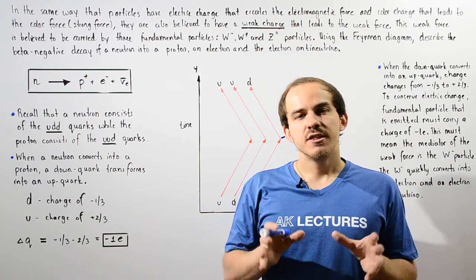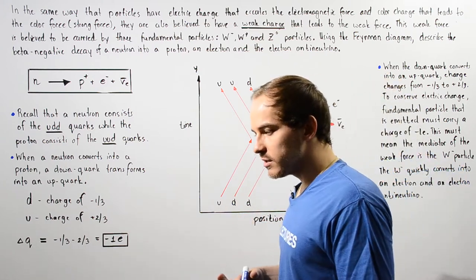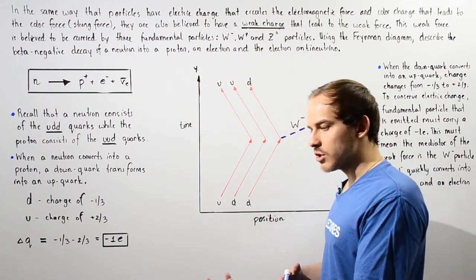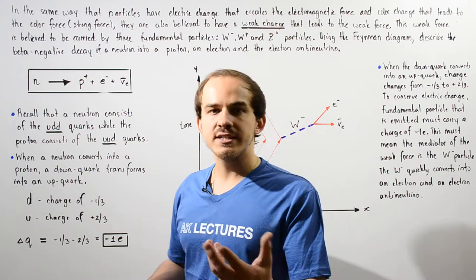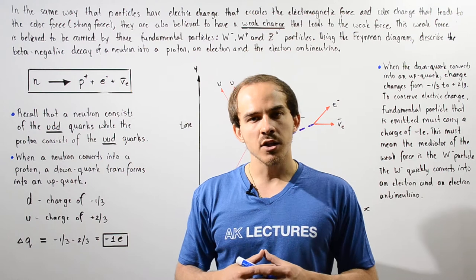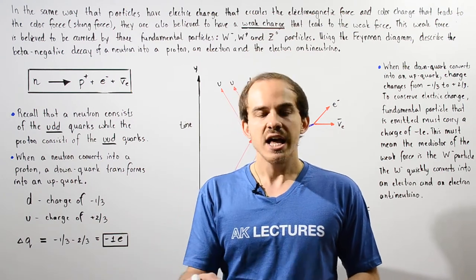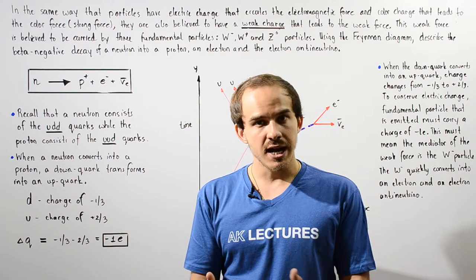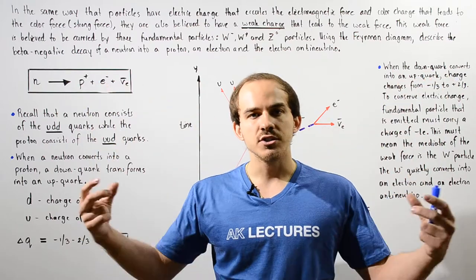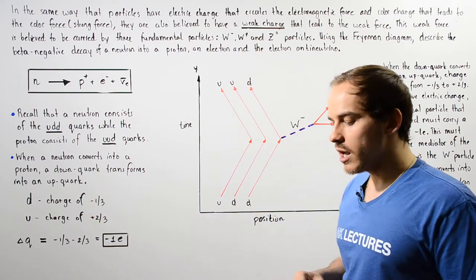In our discussion thus far on particle physics, we said that particles can have two types of charges. We spoke of electric charges that are carried, for example, by electrons. When two electrons interact with one another, they exchange the fundamental particle we call the photon. This photon is said to carry or mediate the electromagnetic force that causes these two electrons to repel one another when they come close to one another.